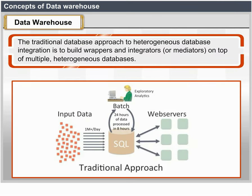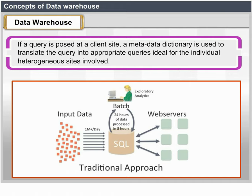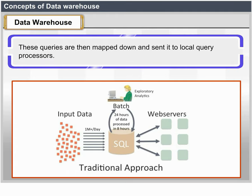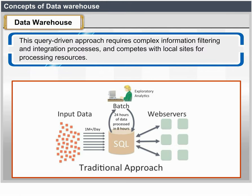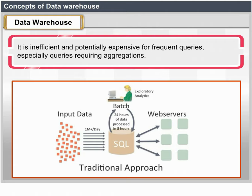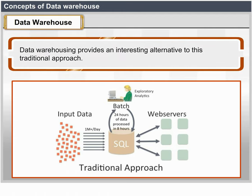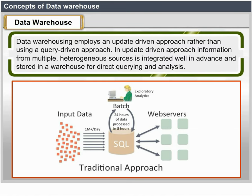The traditional database approach to heterogeneous database integration is to build wrappers and integrators or mediators on top of multiple heterogeneous databases. When a query is posed to a client site, a metadata dictionary is used to translate the query into queries appropriate for the individual heterogeneous sites involved. These queries are then mapped and sent to local query processing. The results returned from different sites are integrated into a global answer set. This query-driven approach requires complex information filtering and integration processes and competes with local sites for processing resources, and is inefficient and potentially expensive for frequent queries, especially queries requiring aggregations.